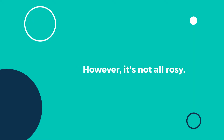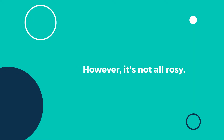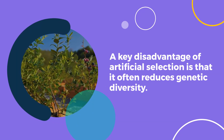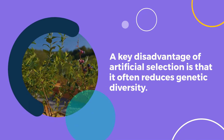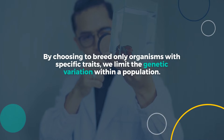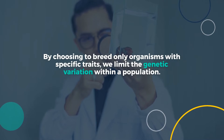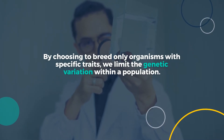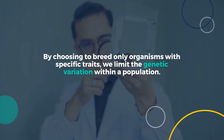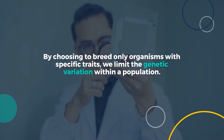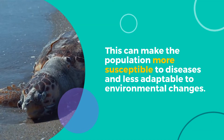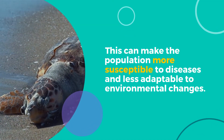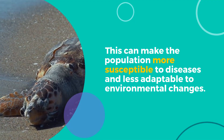However, it's not all rosy. A key disadvantage of artificial selection is that it often reduces genetic diversity. By choosing to breed only organisms with specific traits, we limit the genetic variation within a population. This can make the population more susceptible to diseases and less adaptable to environmental changes.